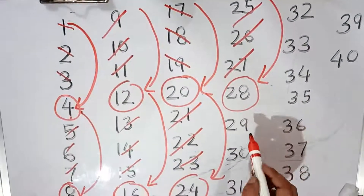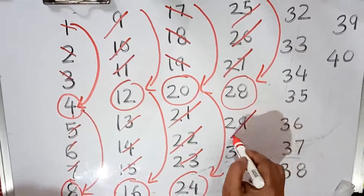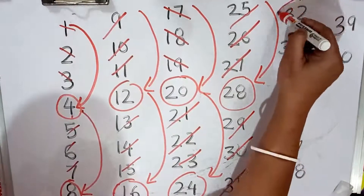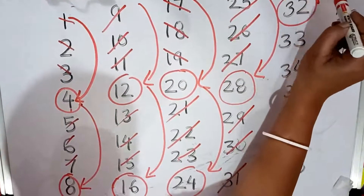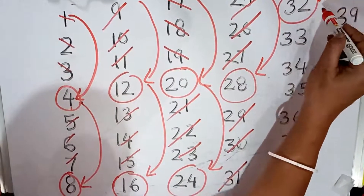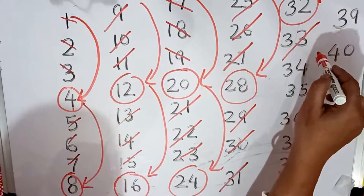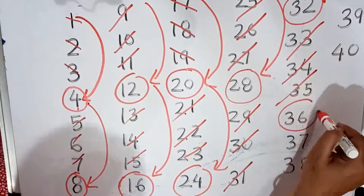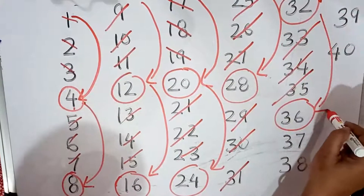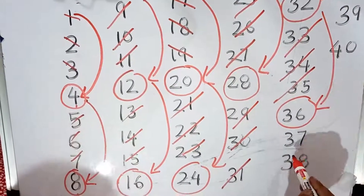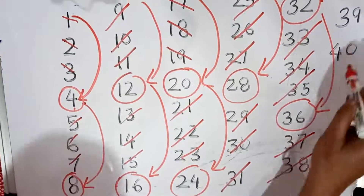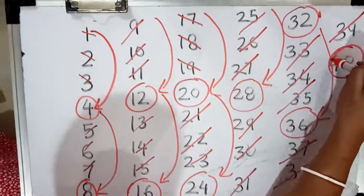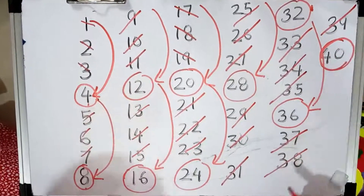Now, what's next? 29, 30, 31 — yes, this is the number: 32. Now again, jump 3: 33, 34, 35 — 36 is the next number. Now 37, 38, 39 — which number is this? Number 40.